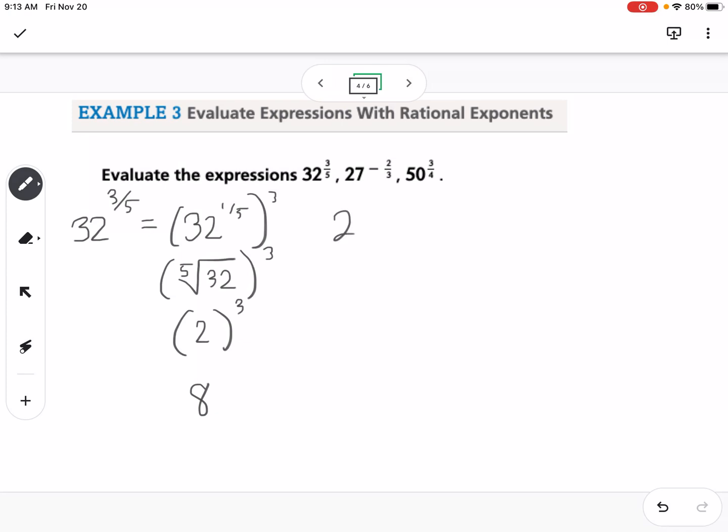Okay, 27 to the negative 2 thirds. I can rewrite as 27 to the 1 third power raised to the negative 2, based on our power properties. So 27 to the 1 third power is just 3. 3 to the negative 2, so remember when we have a negative exponent, it moves it to the bottom, so this would be 1 over 3 squared, which would be 1 ninth.